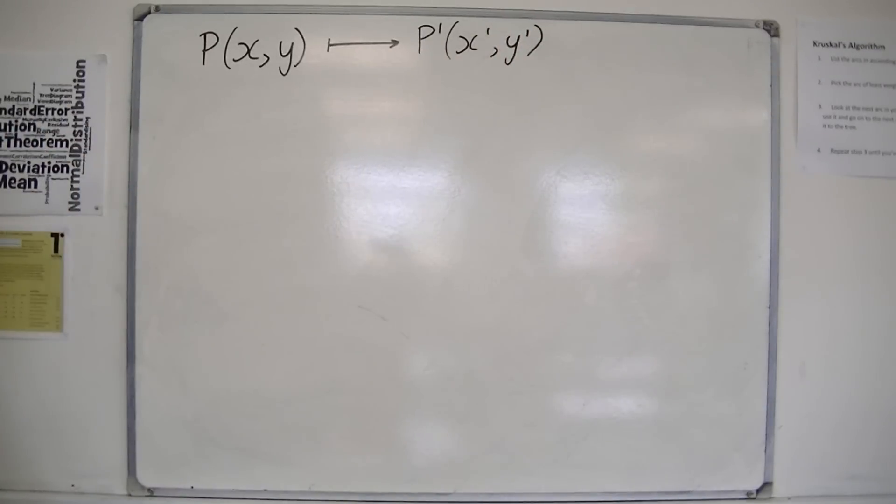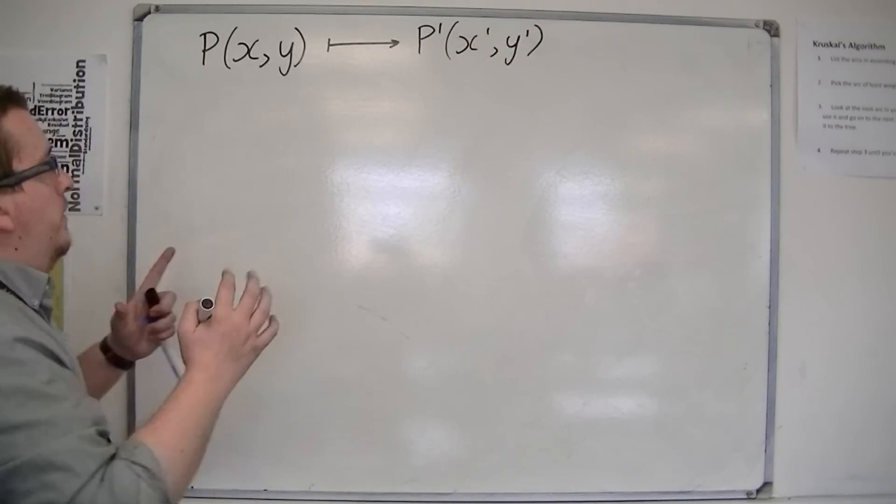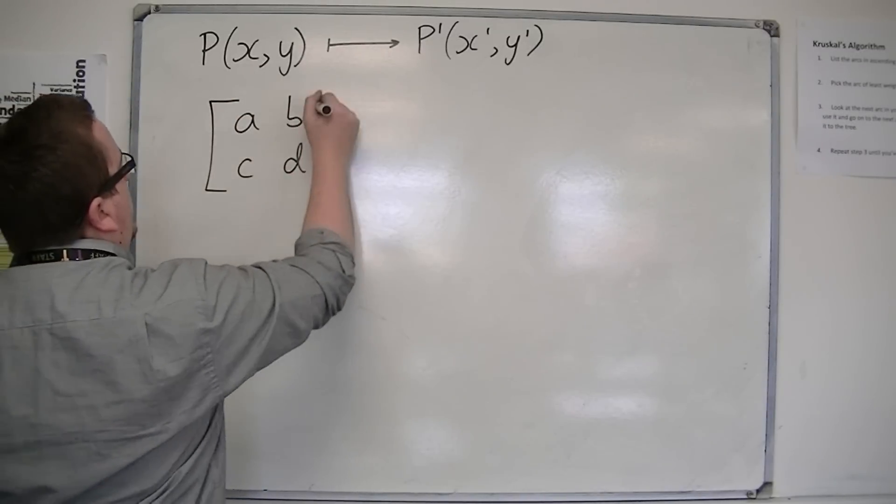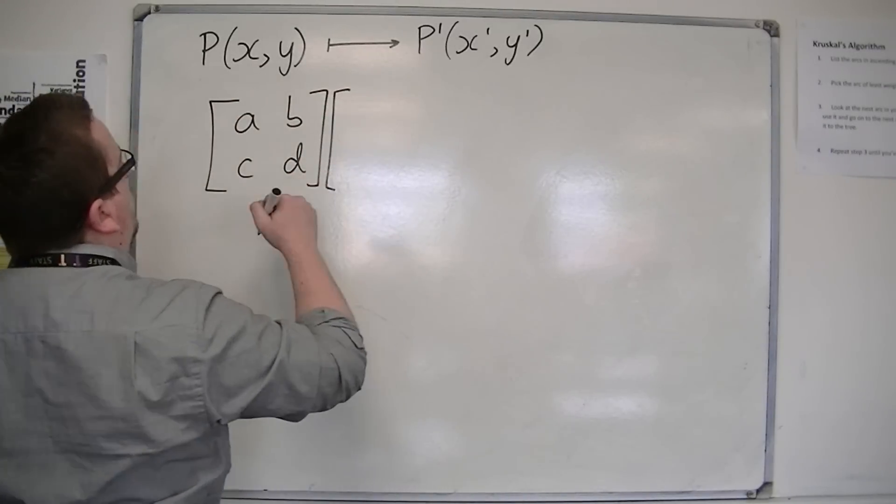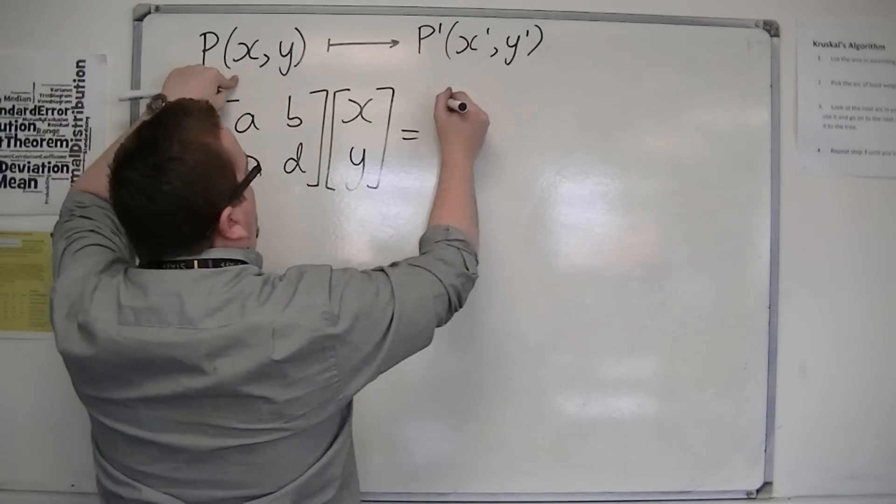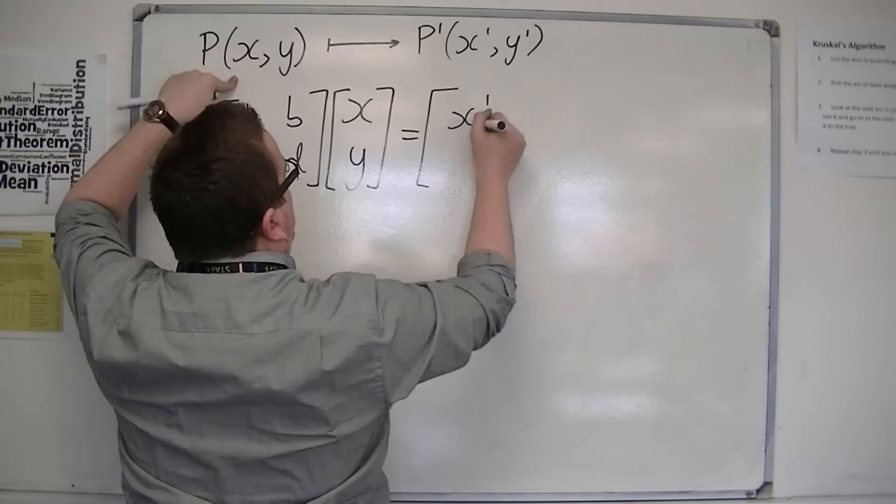Then a matrix A, B, C, D will transform x, y onto those new coordinates, x prime, y prime.